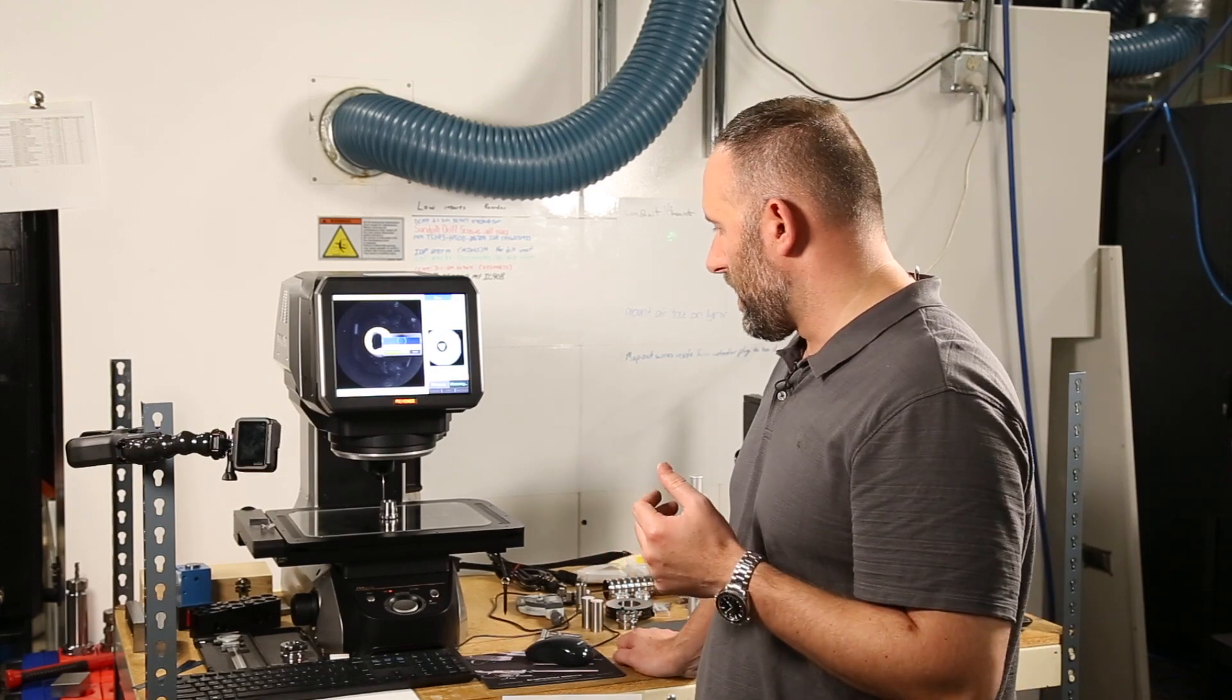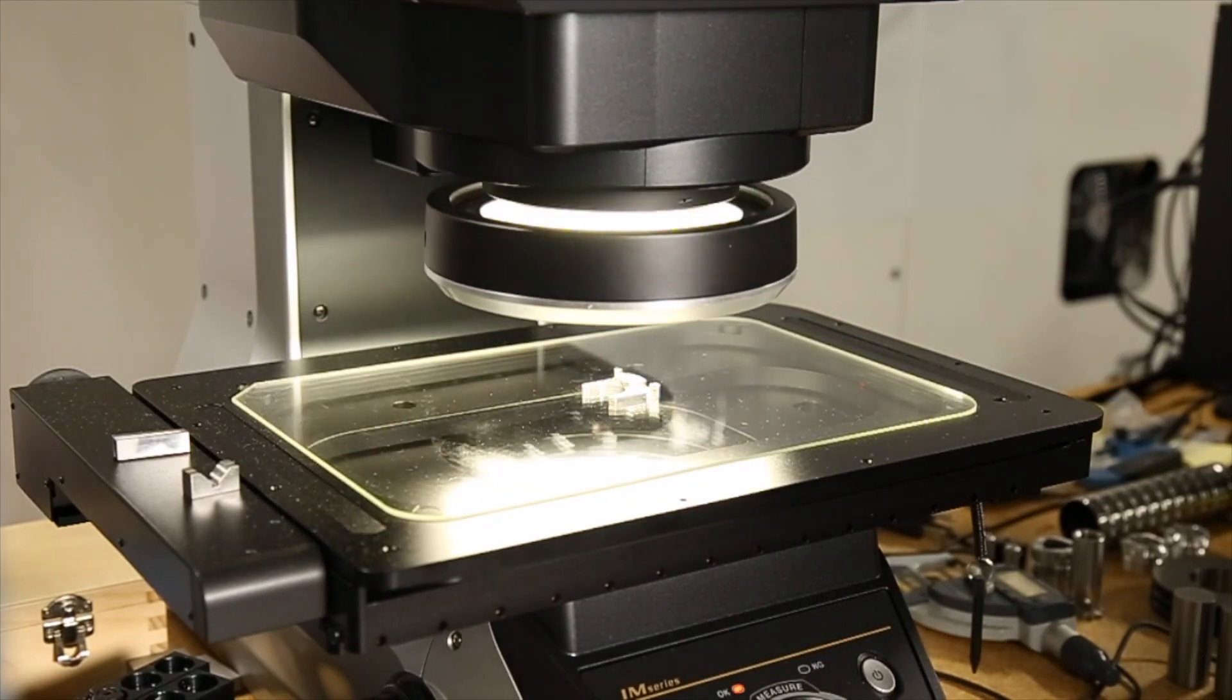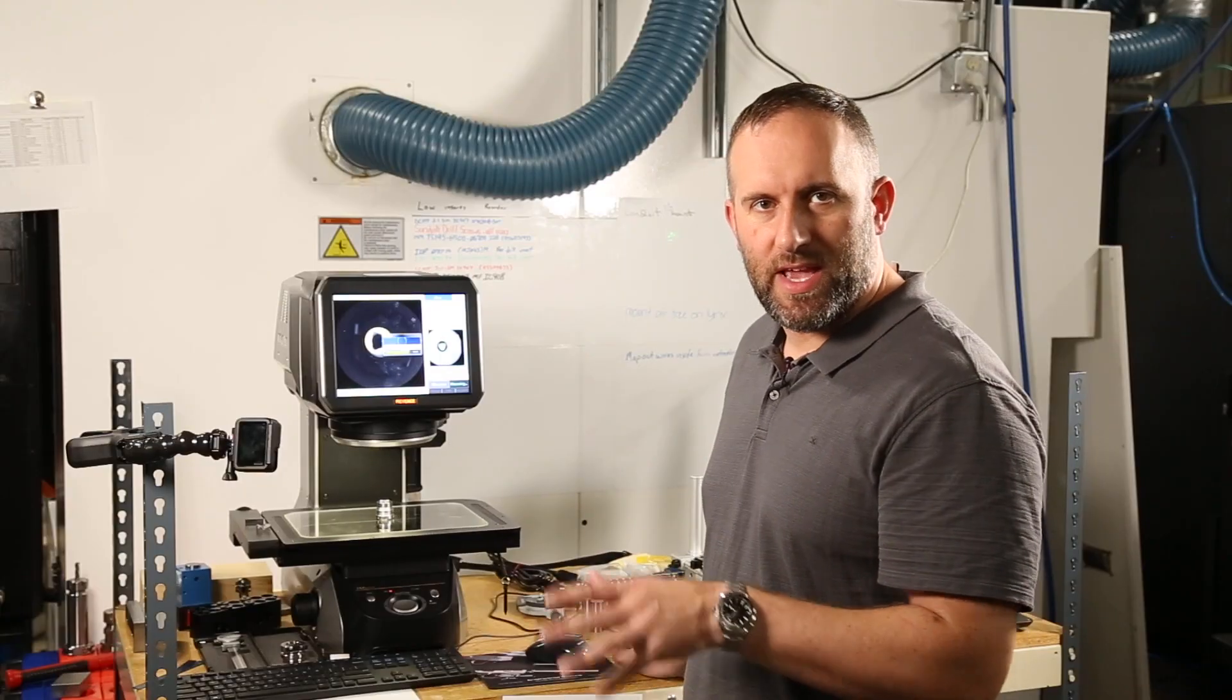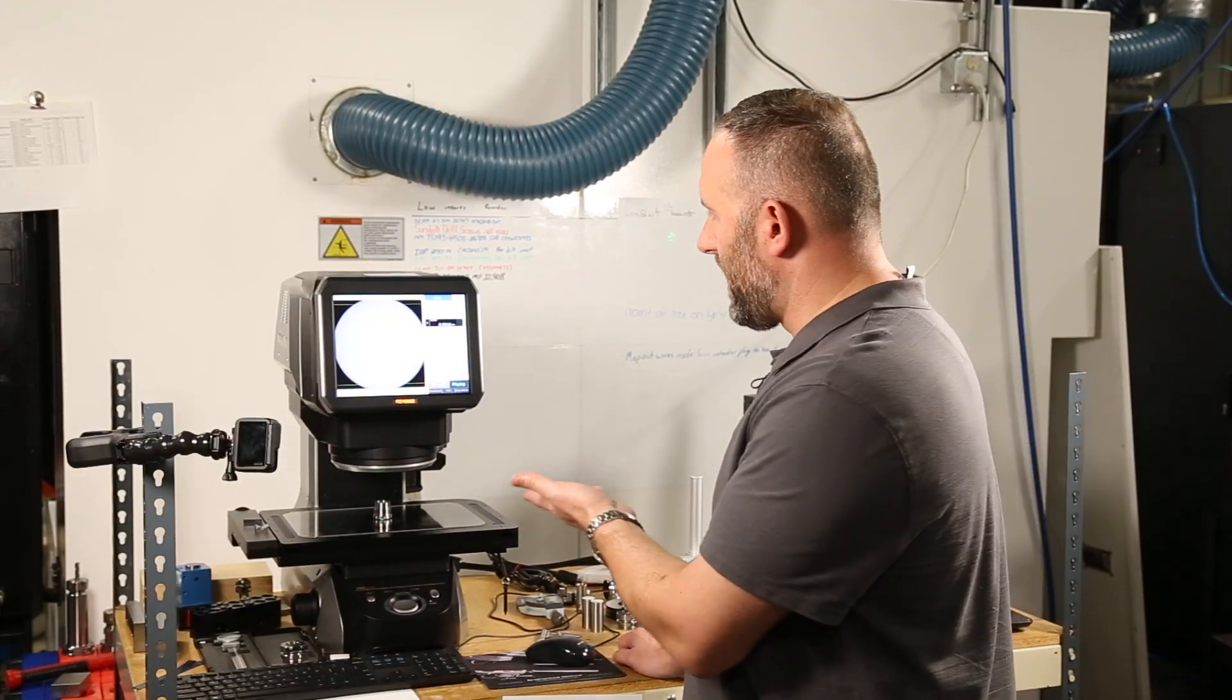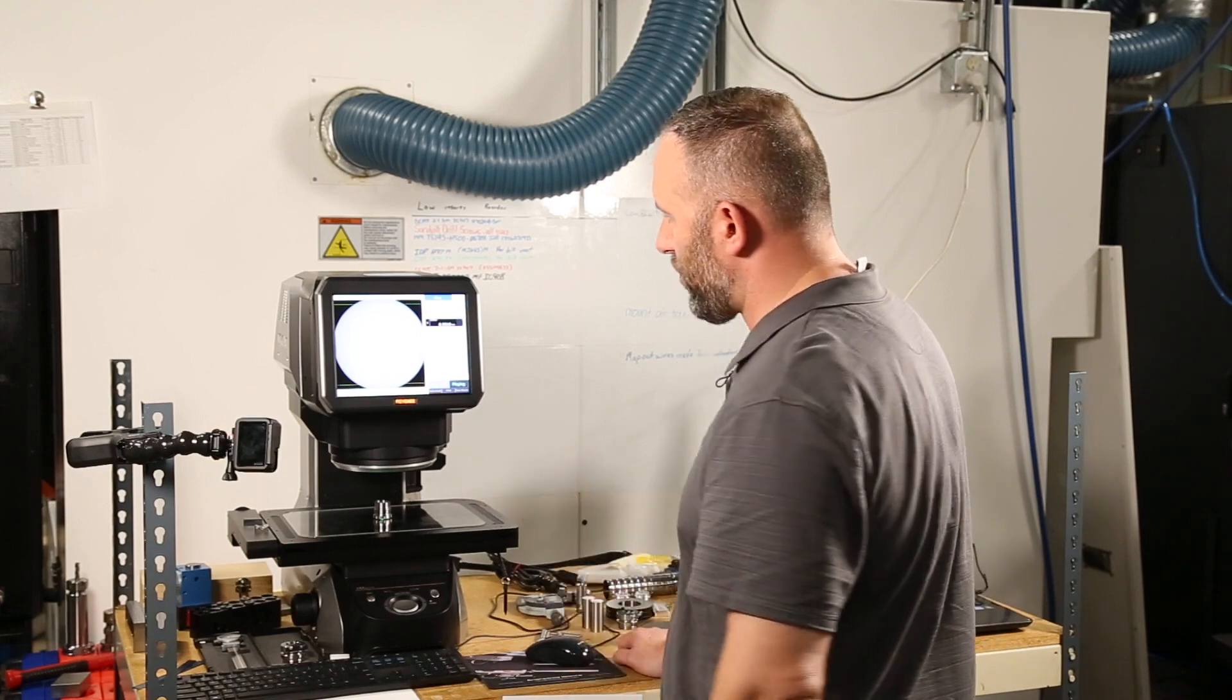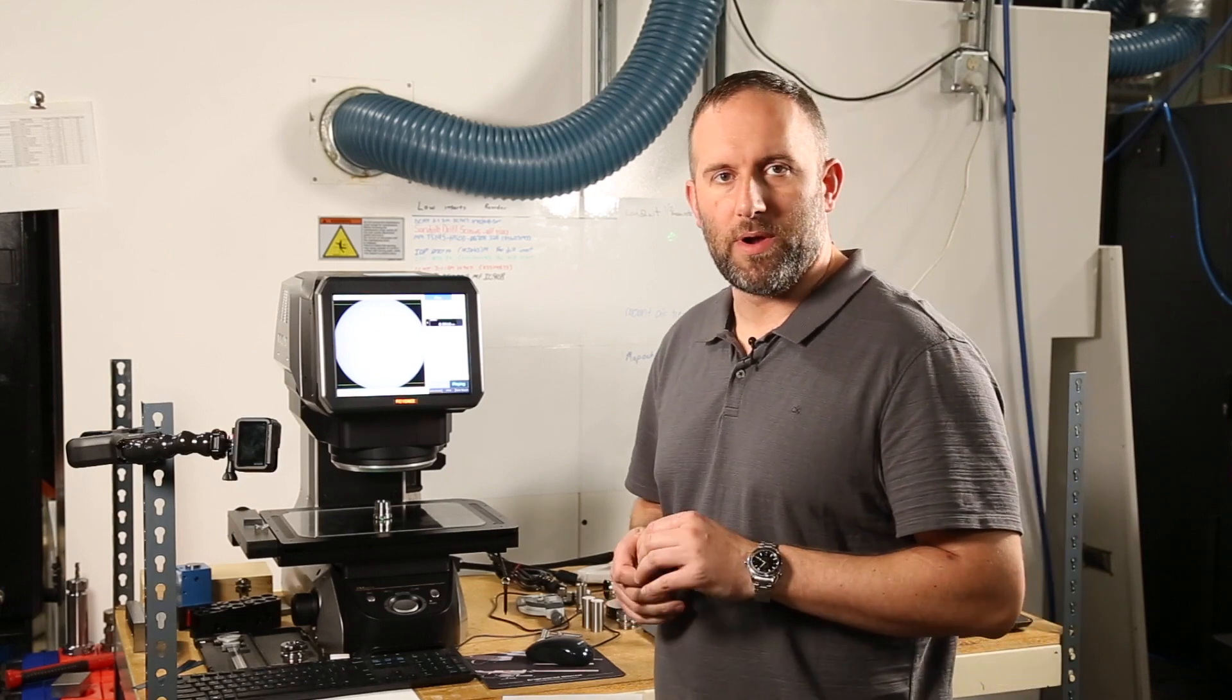So this equipment requires ideally an operator that has some understanding of the different types of strategies to use to get the highest measuring resolution. And so in this case, we're using the light probe to measure the ID bore, the critical ID bore of a three lug rear coupler.